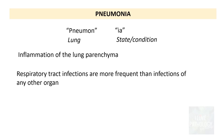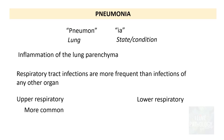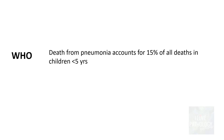Respiratory tract infections are more frequent than infections of any other organ. Upper respiratory tract infections are more common and include the common cold, respiratory syncytial virus, and various viral etiologies. According to WHO estimates, death from pneumonia accounts for approximately 15% of all deaths in children under the age of 5 years. People at risk include adults over 65 years of age and those with comorbid conditions.